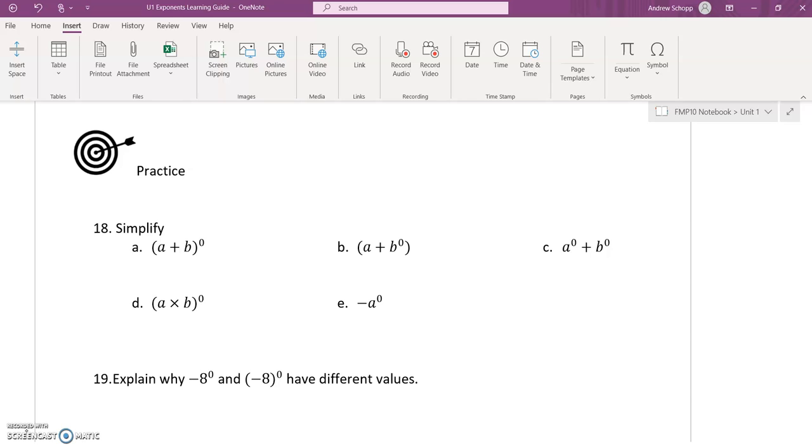For question 18, you're asked to simplify each of these. For part A, we have (a + b) as the base, and we're raising it to the power of zero. Any base raised to the power of zero is one. For part B, we have a + b^0. So the base here is just b being raised to the power of zero. A has not changed, so we have a + 1.